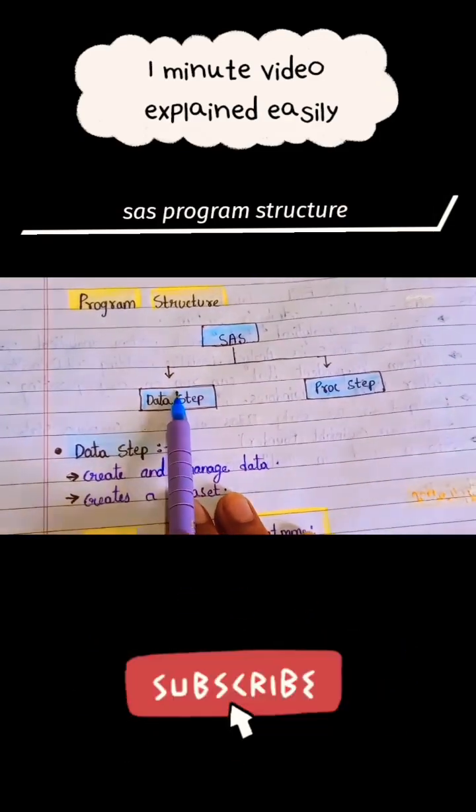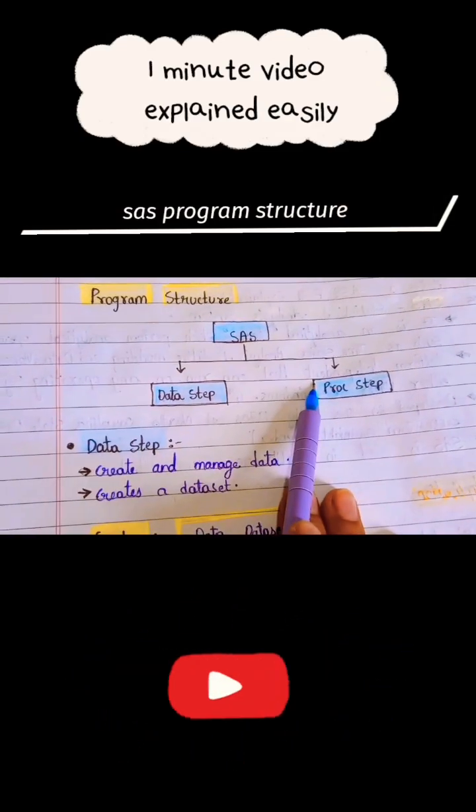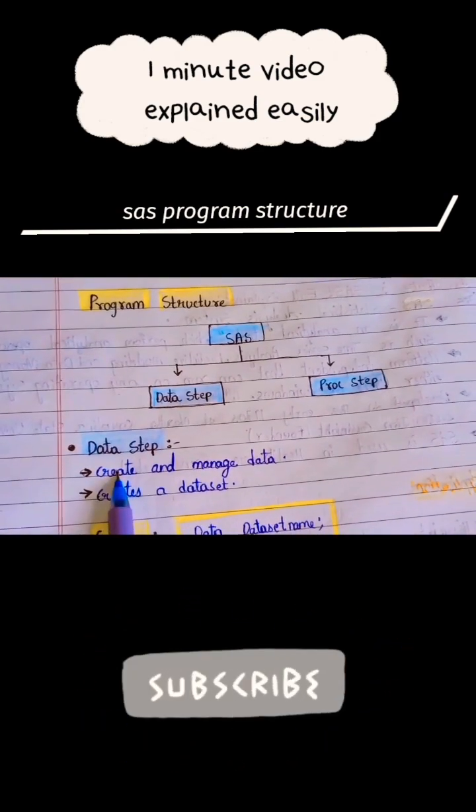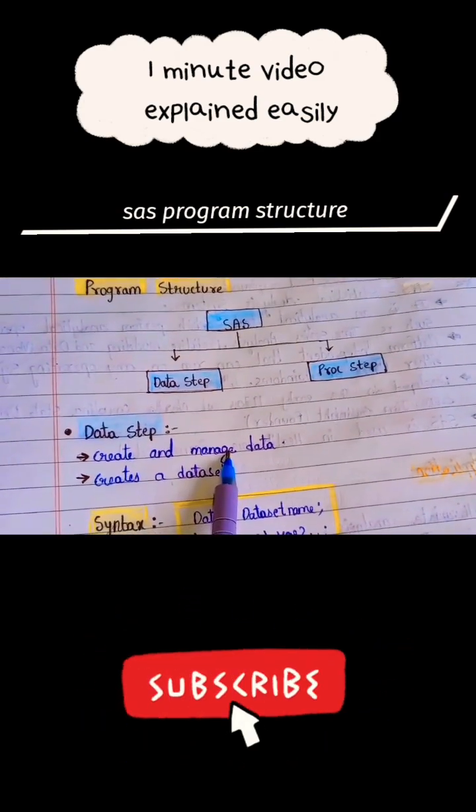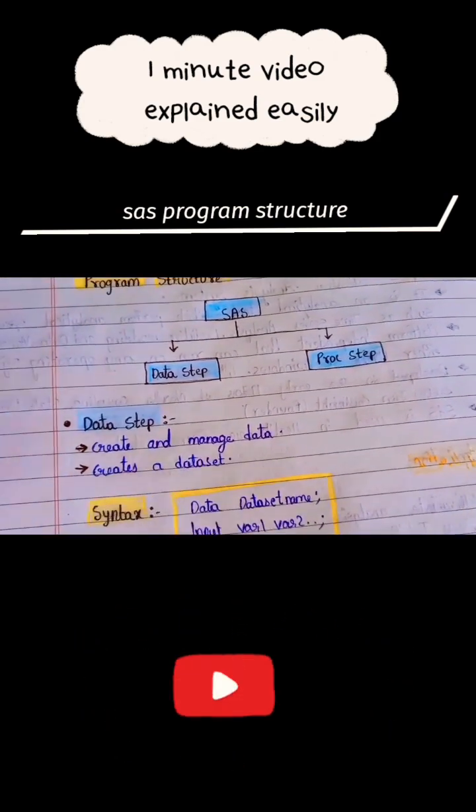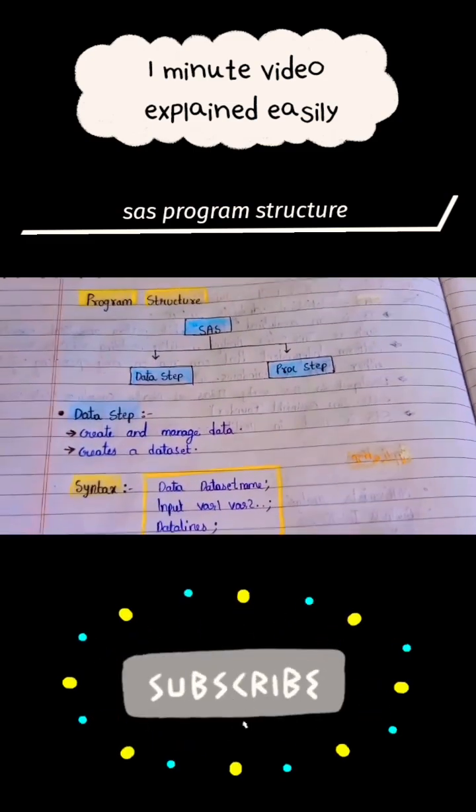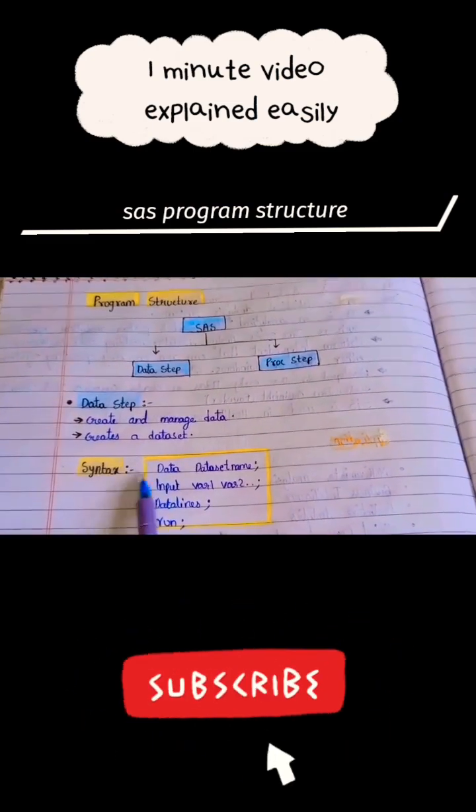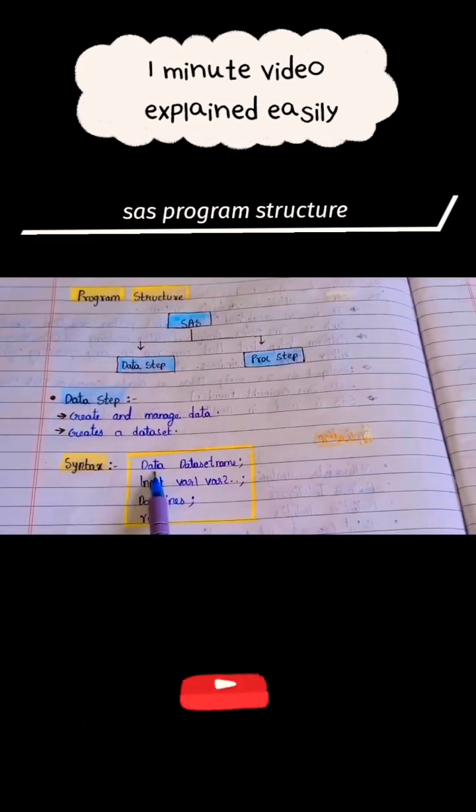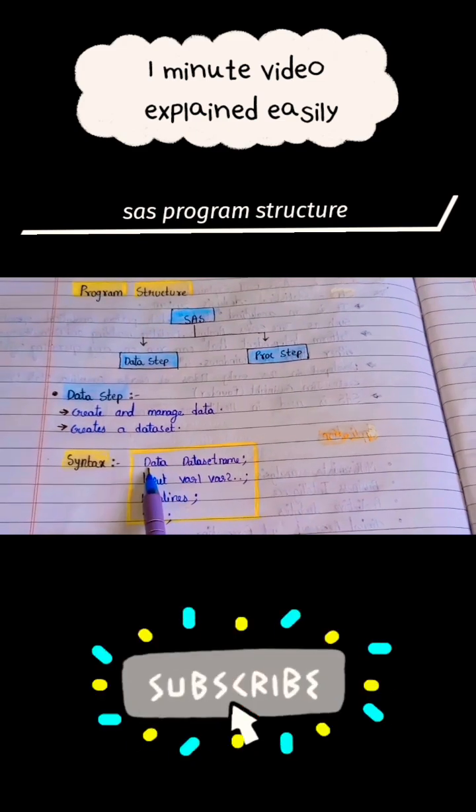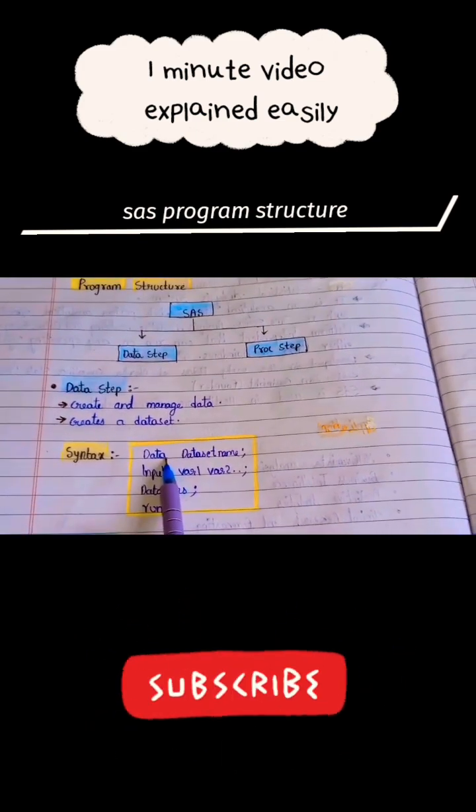SAS contains two steps: data step and proc step. The data step will create and manage the data, and it creates a dataset. So syntax - this DATA is permanent. This is a keyword actually.